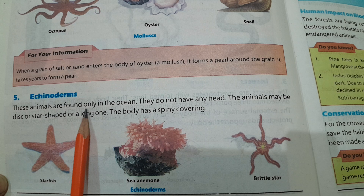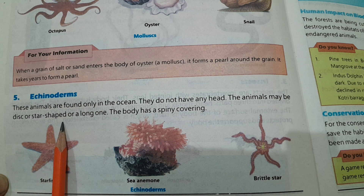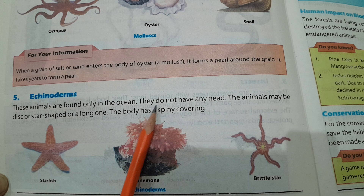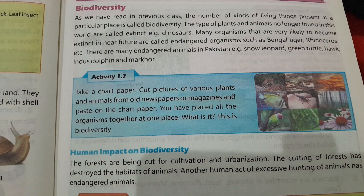Echinoderms — these animals are found only in the oceans. یہ جانور صرف سمندروں میں پائے جاتے ہیں۔ They do not have any head. The animals may be disk-shaped, star-shaped, or large in size. The body has a spiny covering, as shown here.